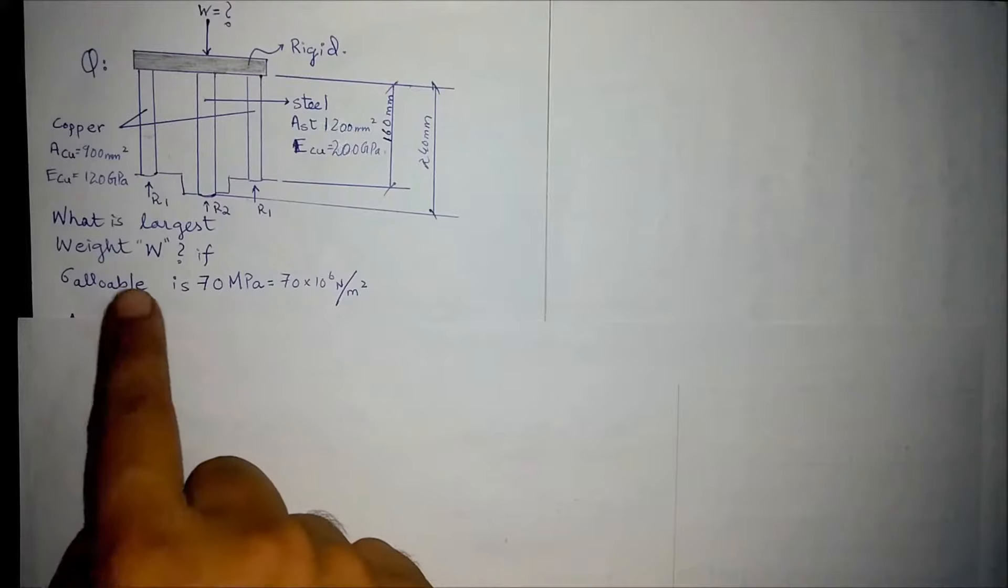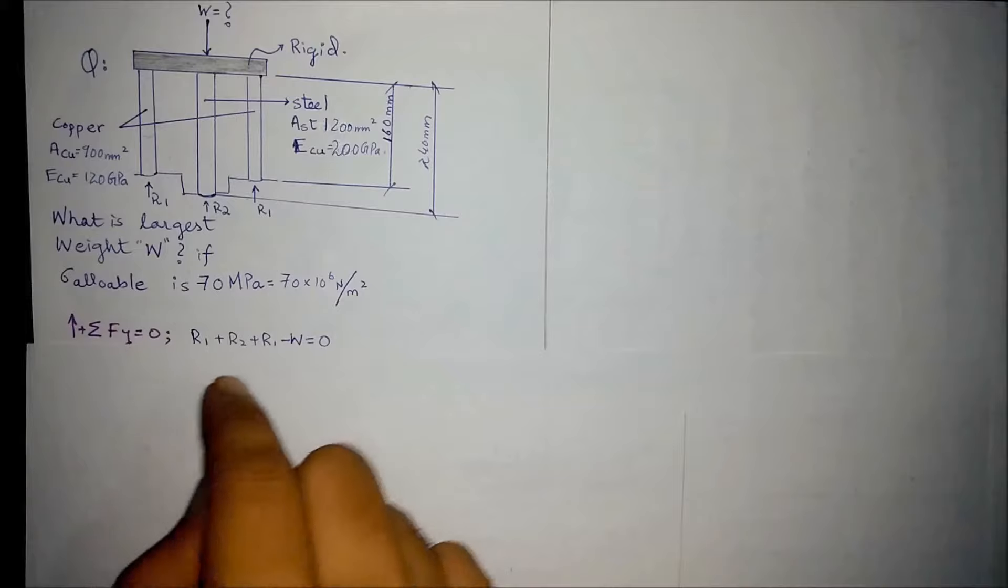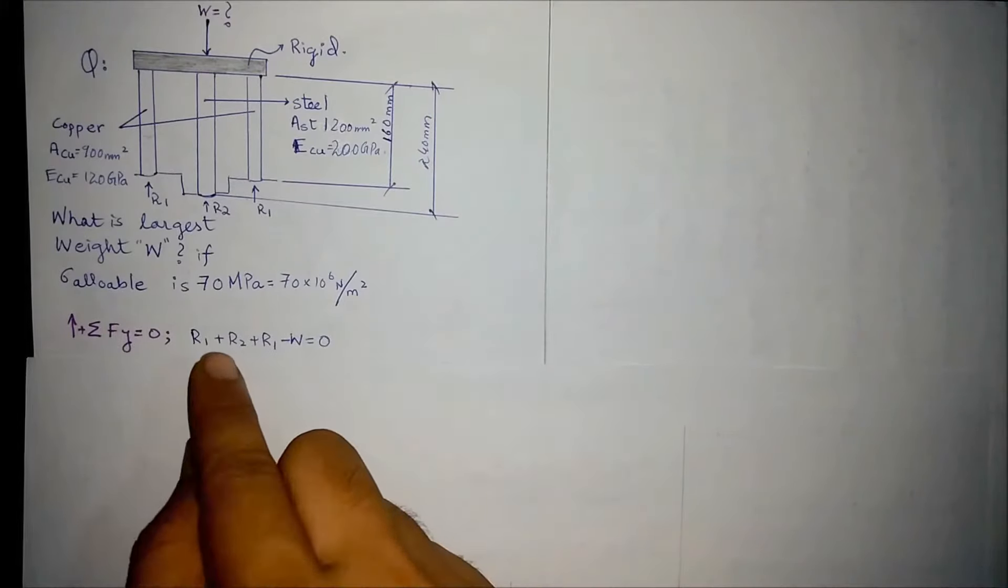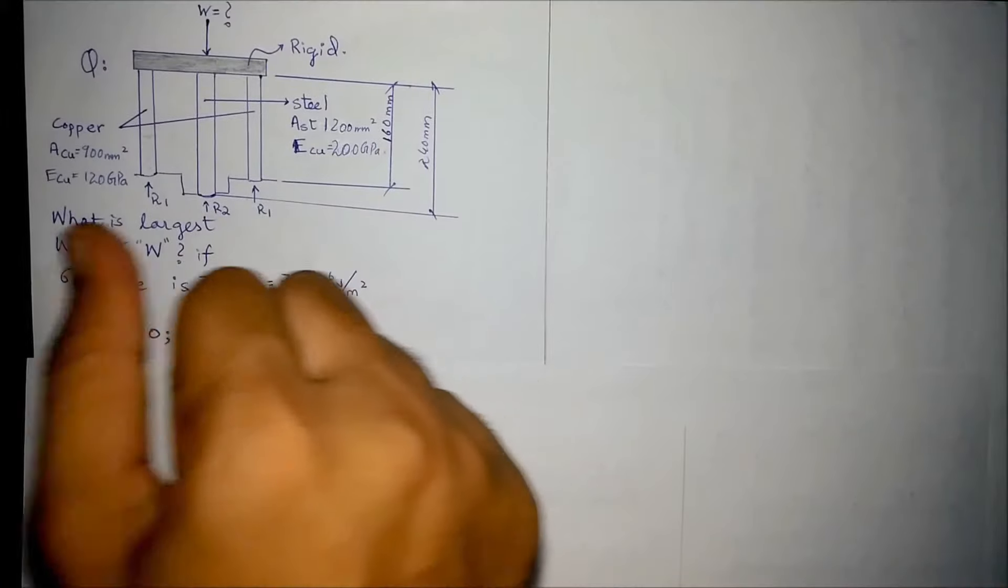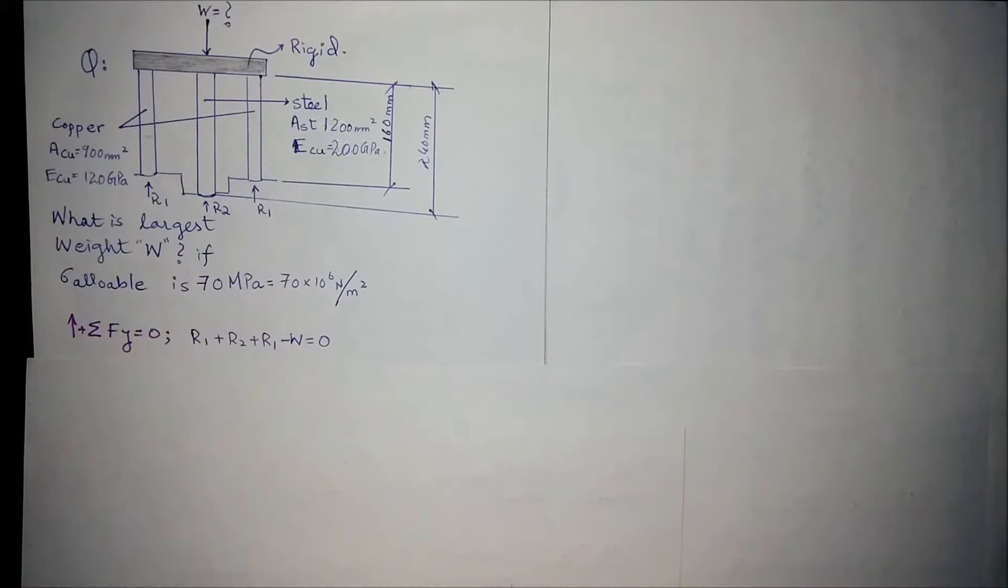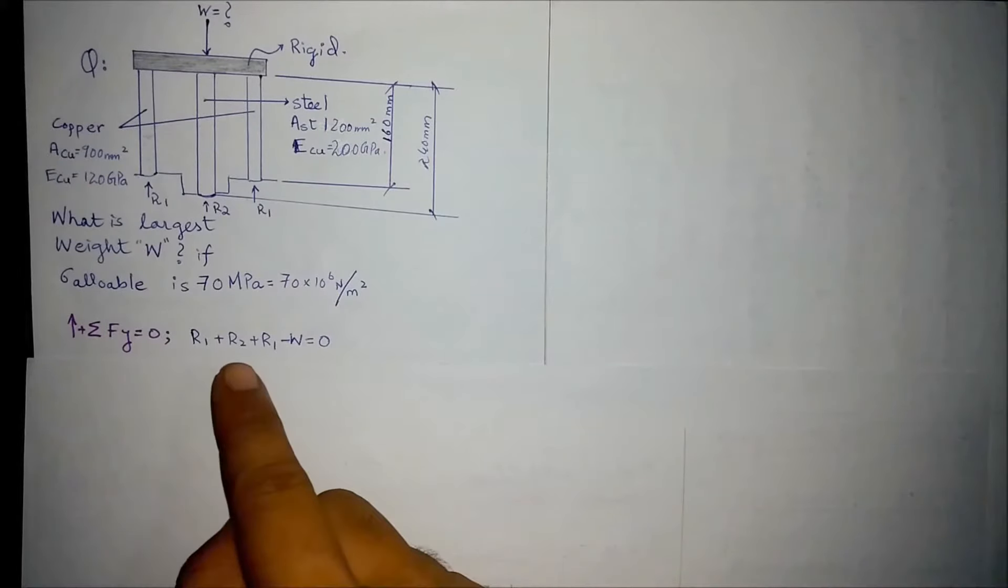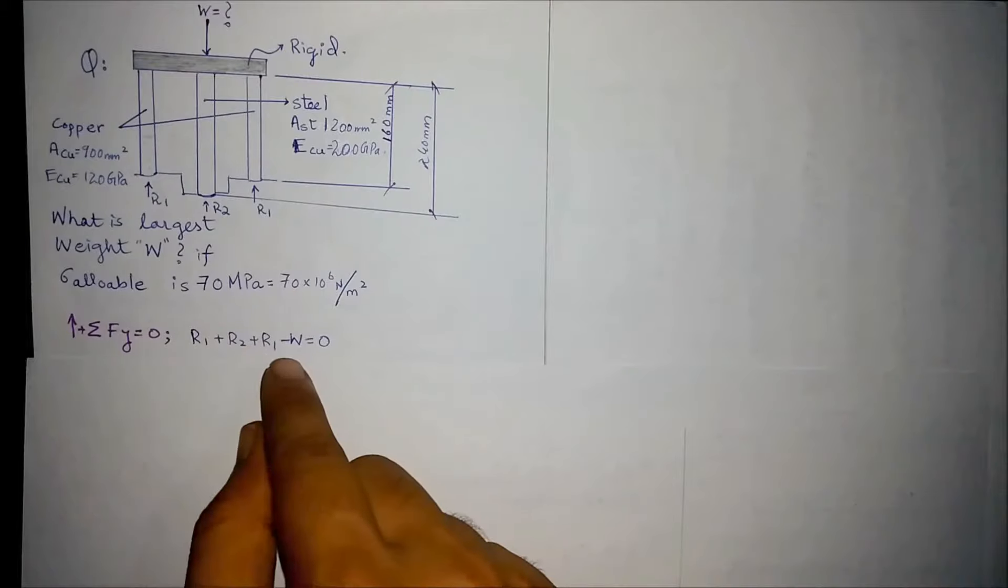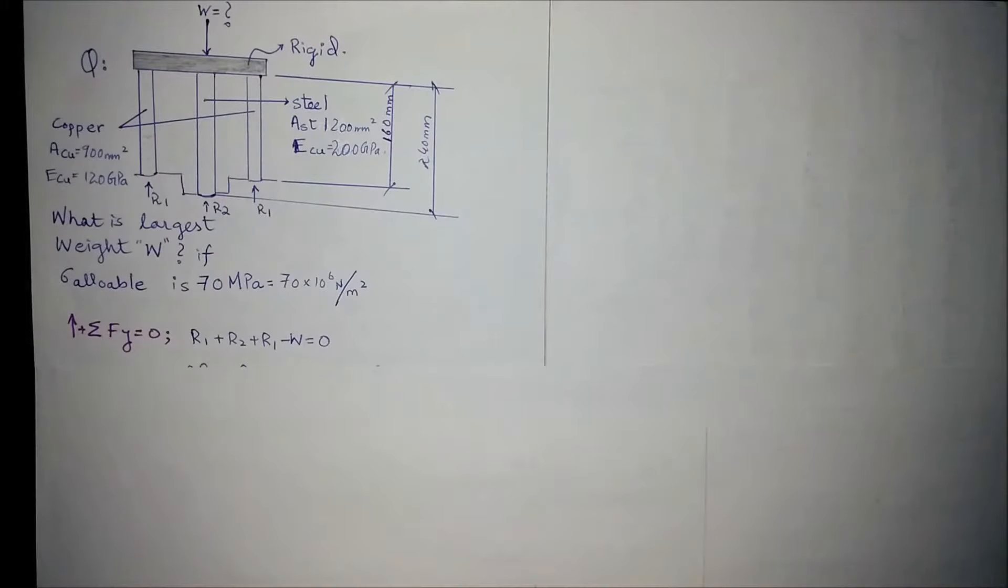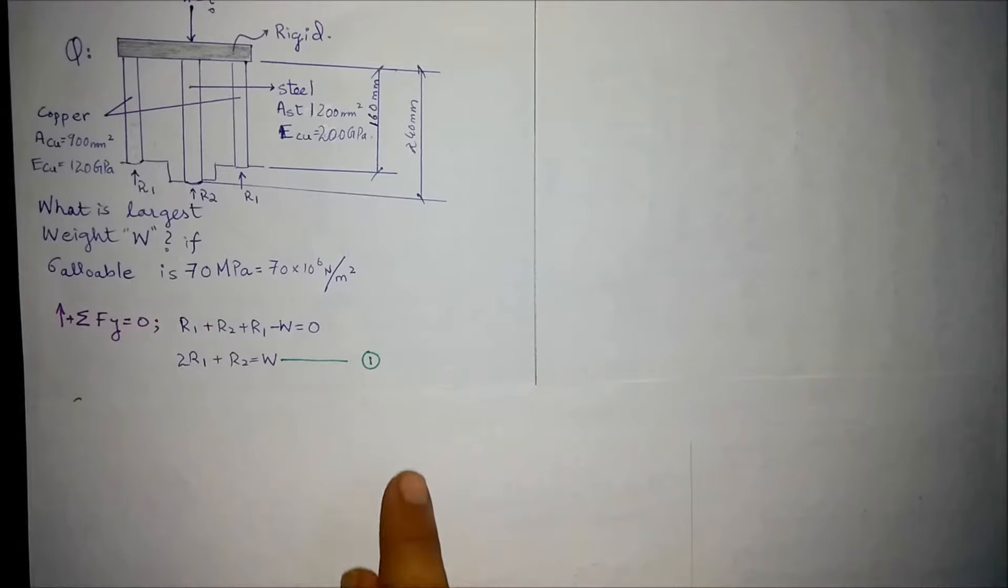First of all we apply the summation of forces in y direction: plus R1, R2, and we call these two reactions as R1 because both are of copper, and the center one is of steel. The negative force acting is W, so R1 plus R2 plus R1 minus W equals zero. Two R1 plus R2 equals W. Let's call this equation number one.